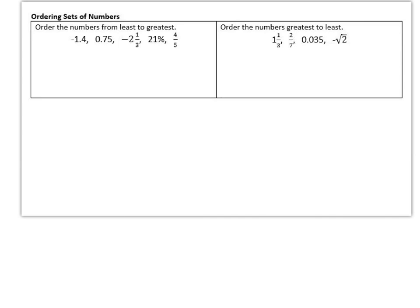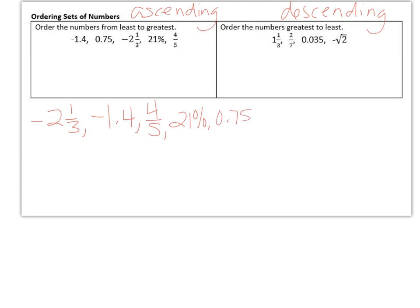When we're ordering our numbers from least to greatest, another way of saying least to greatest is ascending. And when we're ordering from greatest to least, another way of saying that is descending. And you would want to change all of your numbers into decimals so that you could compare them. And the final order for this first one would be negative 2 and 1 third, followed by negative 1.4, followed by 4 fifths, 21%, and 75 hundredths. And then on the second example, it looks like they are already in the correct order from greatest to least.